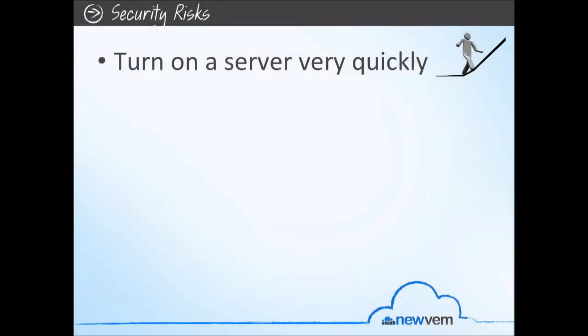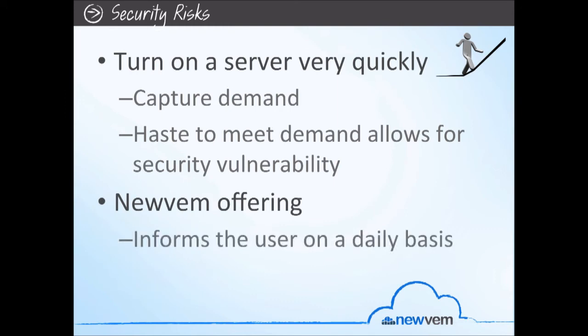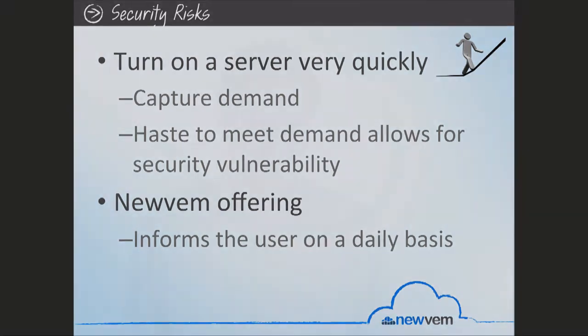Why can security be such a risk for an Amazon cloud? Basically, when users are able to turn on a server very quickly to capture demand, they forget to do some basic setup processes that they would probably do if they had more time. But after their haste to meet demand, they allow that security vulnerability to continue within the cloud. What Nuvim does is inform them on a daily basis that they need to properly configure that security vulnerability. We embrace the cloud because we want to capture opportunity, but we may cut corners that could be very painful. We continuously say: we respect the way you operate, but we want you to go back and improve the way you're using your baseline.